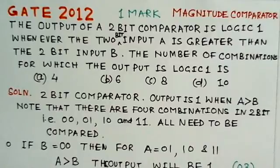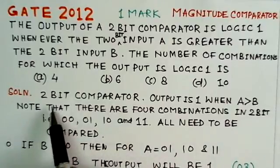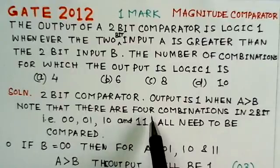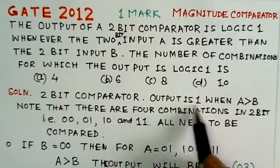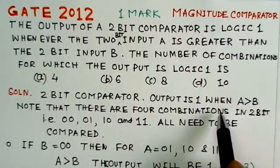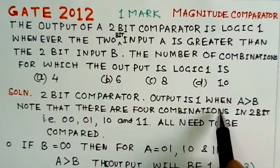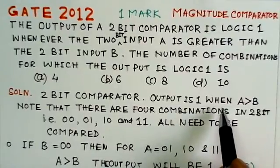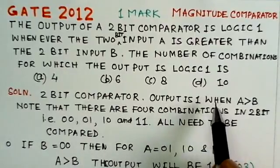Now you see that it's a 2-bit comparator circuit and it's given that output is 1 when A is greater than B. It's a 2-bit number; these 2-bit numbers need to be compared.